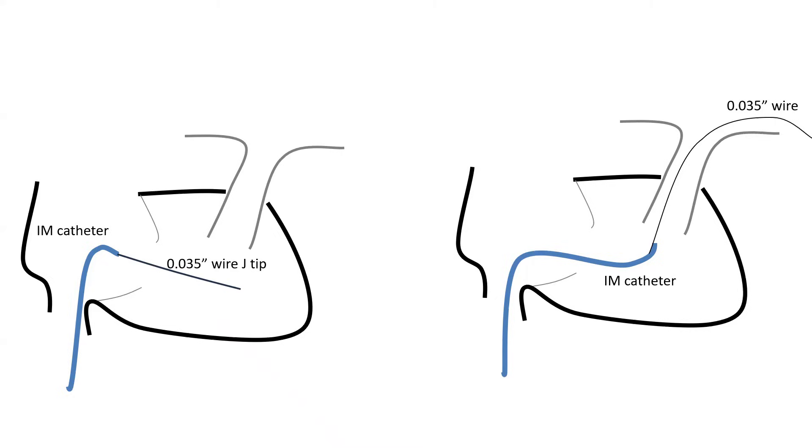Then I make it point toward the RV, I advance the wire to the RV, then I advance the catheter and I give it a clockwise torque and it will point up. Unlike the Swan catheter, this 6 French IM catheter transmits torque easily.